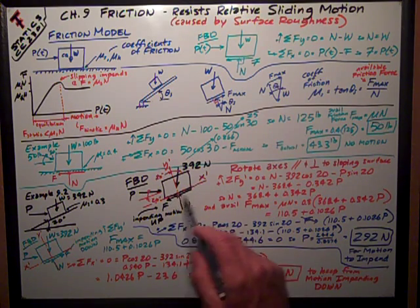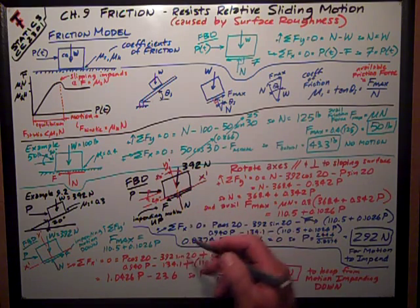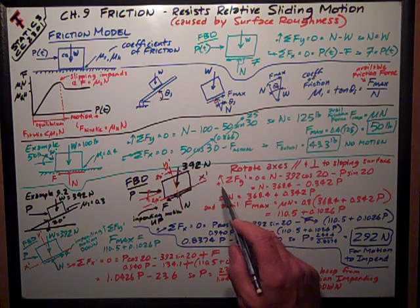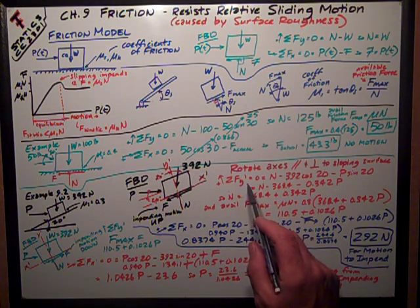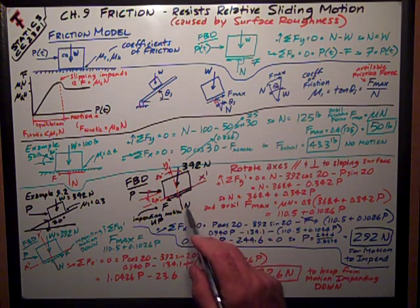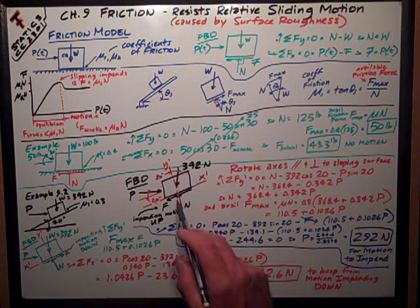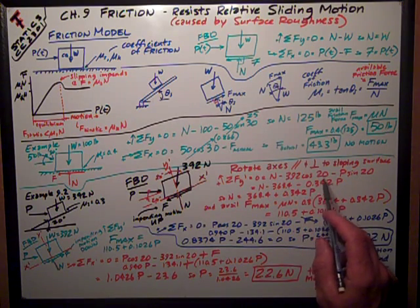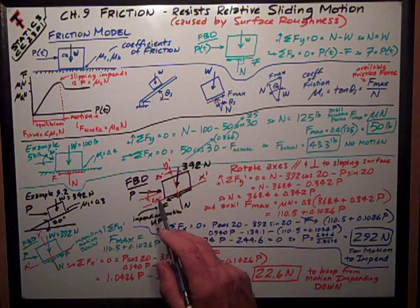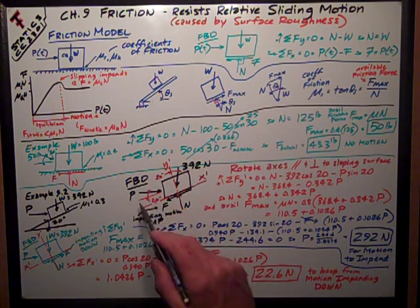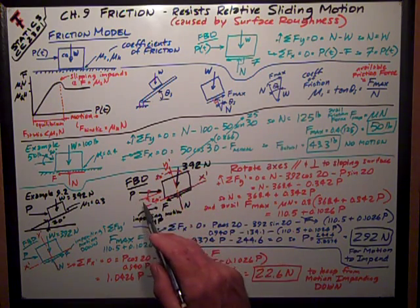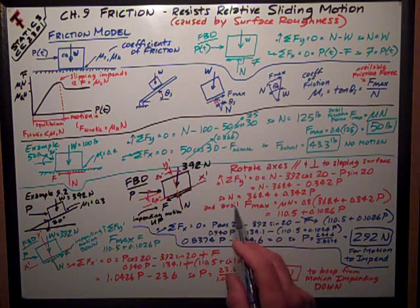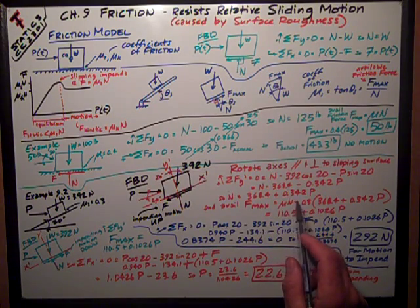The first part of this problem is to see how much force it takes to push that block up the hill to cause impending motion upward. Therefore, my friction force acts opposite to the direction of motion, which is downward along the slope. My normal force is perpendicular to the sliding surface. I first do a sum of forces in the rotated y-prime direction: that's equal to N positive up, minus the y-prime component of the weight which is cosine of 20 times 392, minus the downward component of P in the y-prime direction which is sine of 20 times P. Combining terms, N equals 368.4 plus 0.342P.